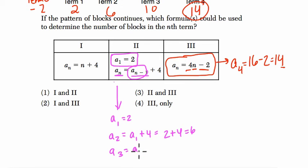Then a3 would be equal to a2 plus four, which equals, well, we just figured it out, a2 is six, so six plus four is ten.